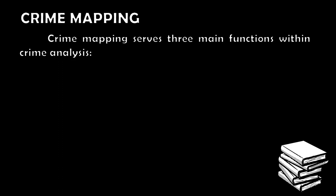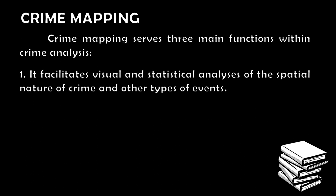In Crime Mapping, it serves three main functions within crime analysis. First, it facilitates the visual and statistical analysis of the spatial nature of crime and other types of events. Through Crime Mapping, we can see illustrated analysis and information regarding crime — it is easy to visualize which areas have more crime and what specific classifications of crimes are most committed there. This makes it easier to analyze the problem and provide immediate solutions.